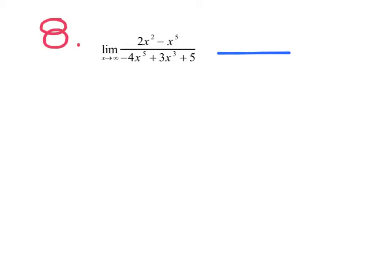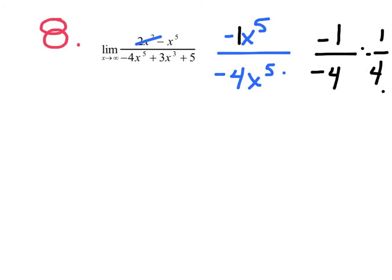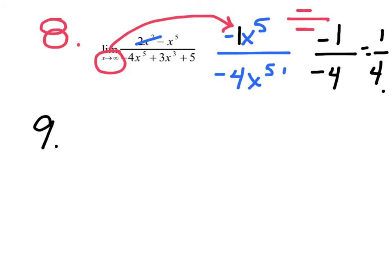Pull out the largest terms: negative x to the fifth on top, negative 4x to the fifth on the bottom — same over same, ratio of coefficients. Coefficient on top is negative 1, on the bottom negative 4, giving positive 1 fourth. Checking signs: positive infinity squared times negative is negative on top; positive infinity to the fifth times negative is negative on bottom. Negative over negative is positive — so positive 1 fourth is confirmed.